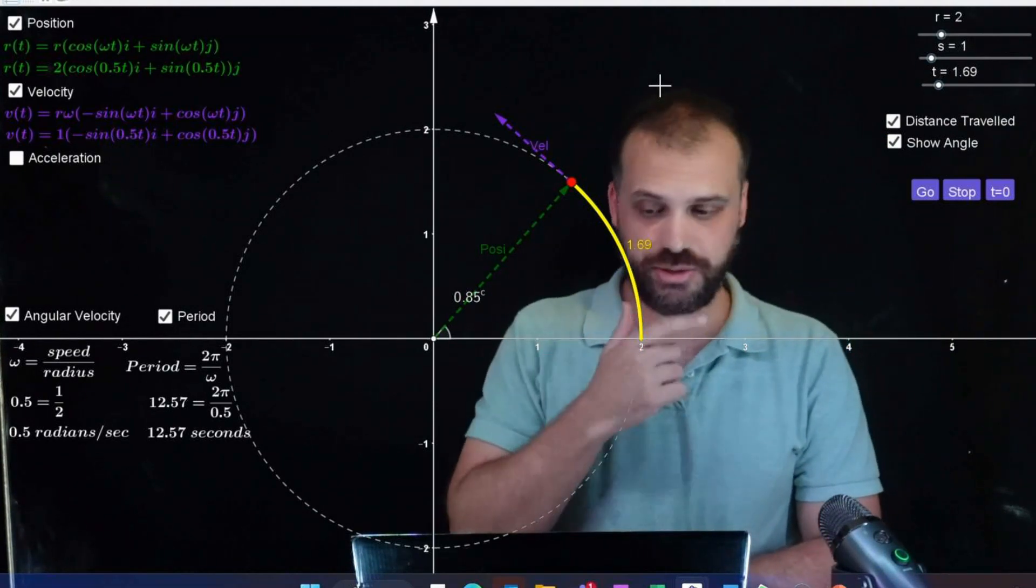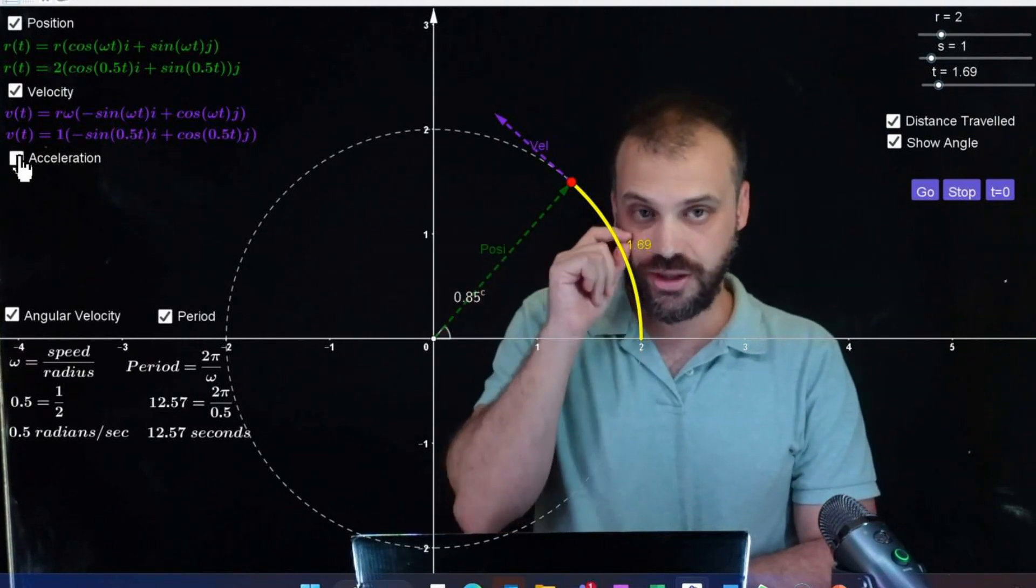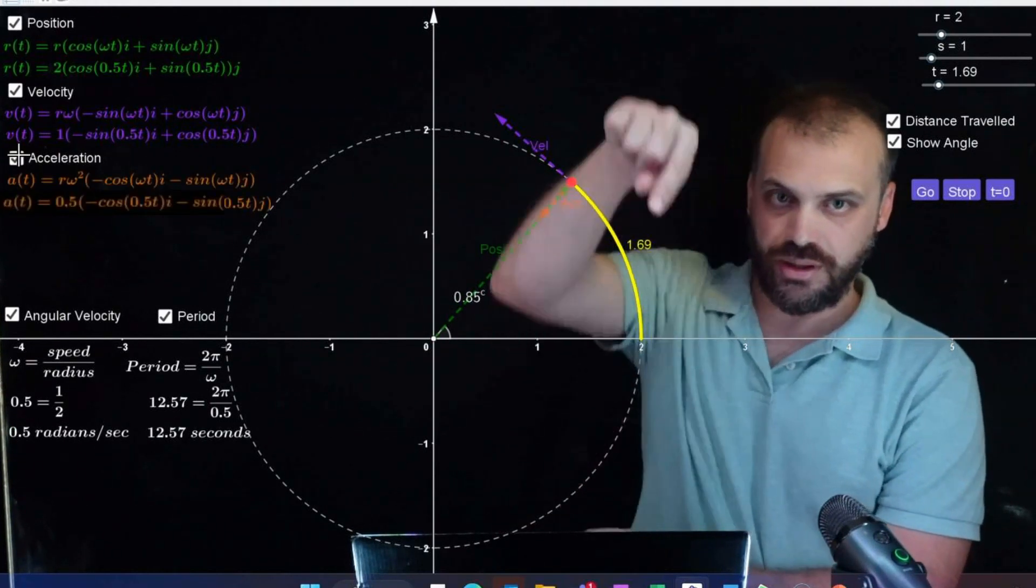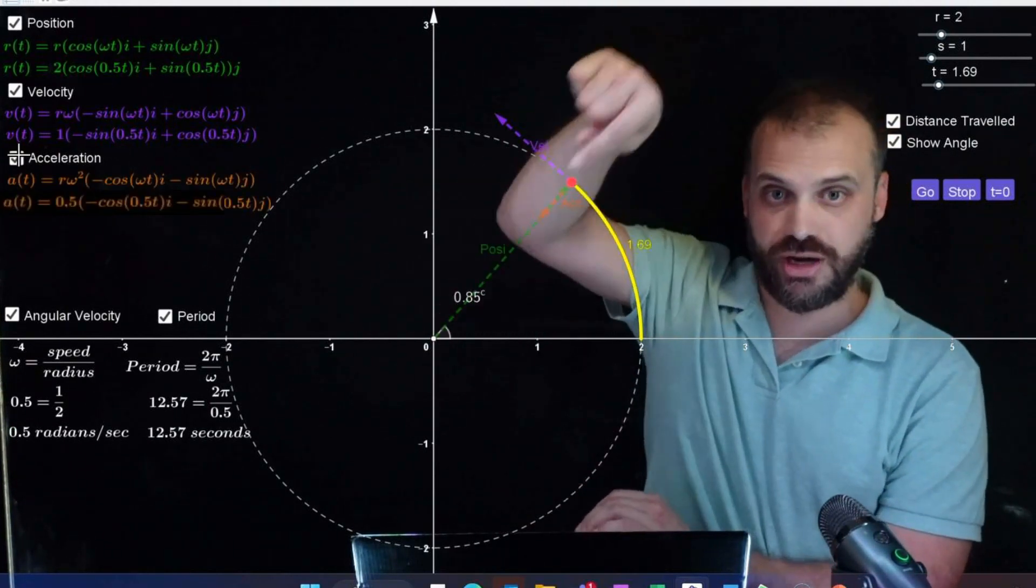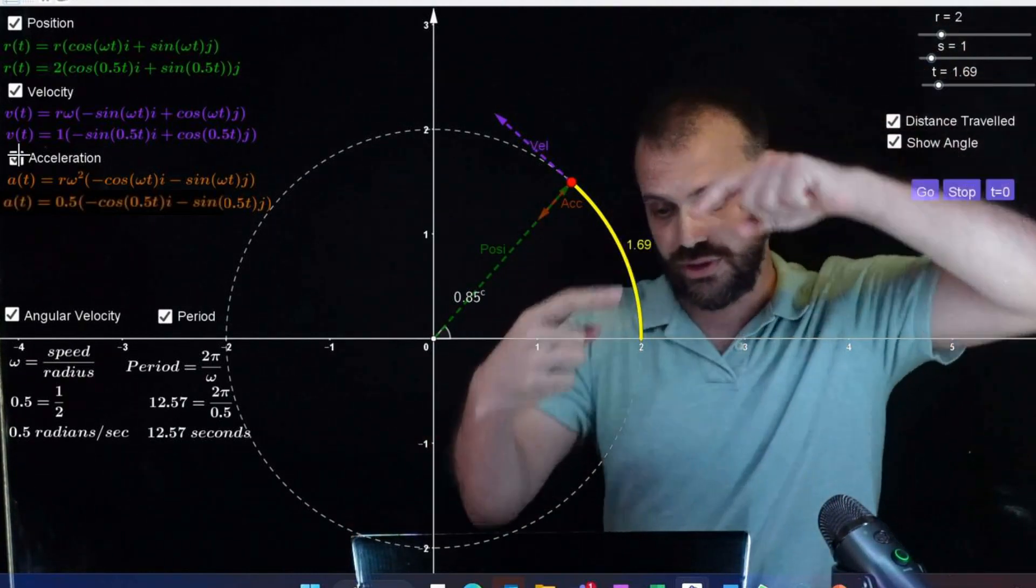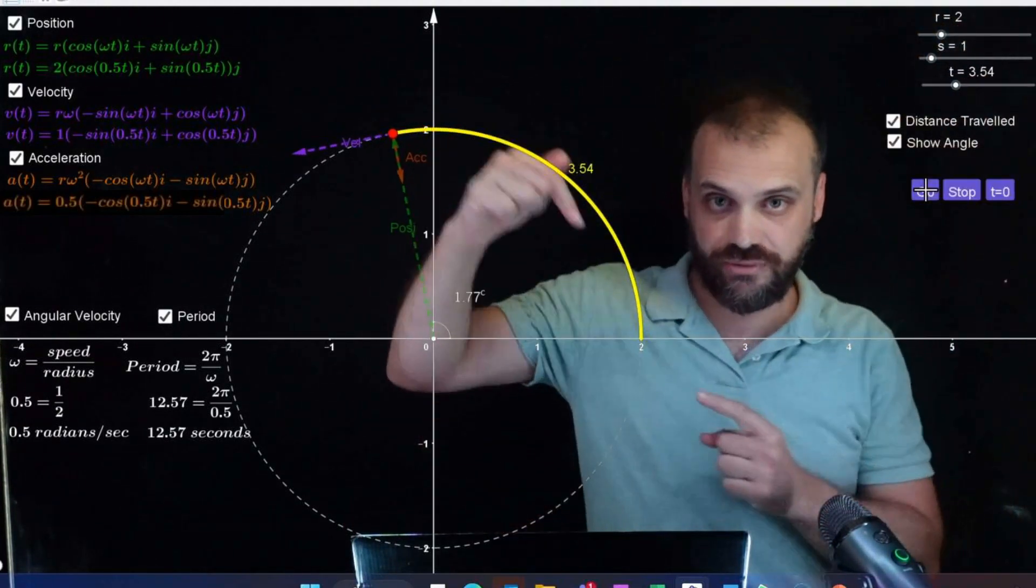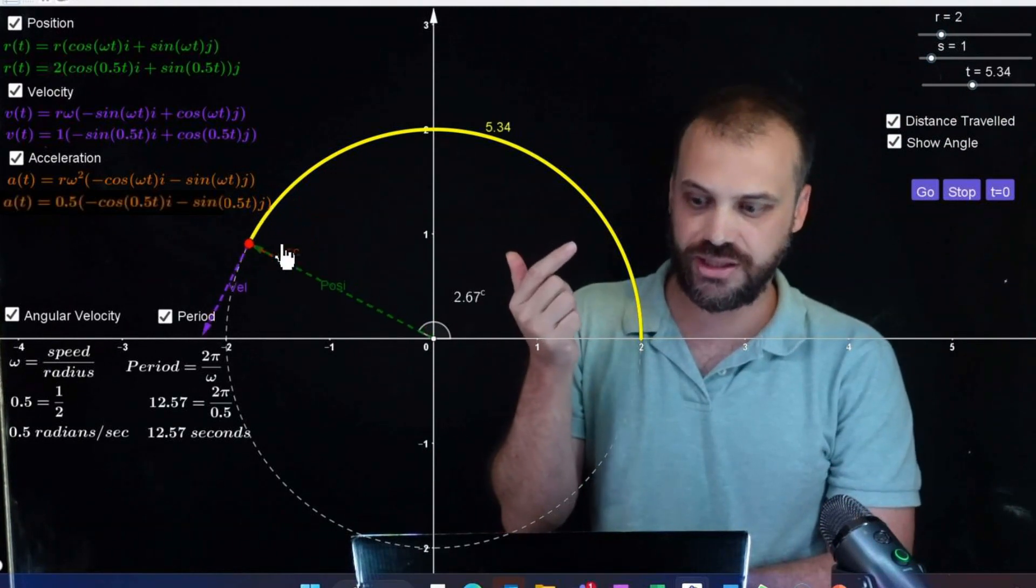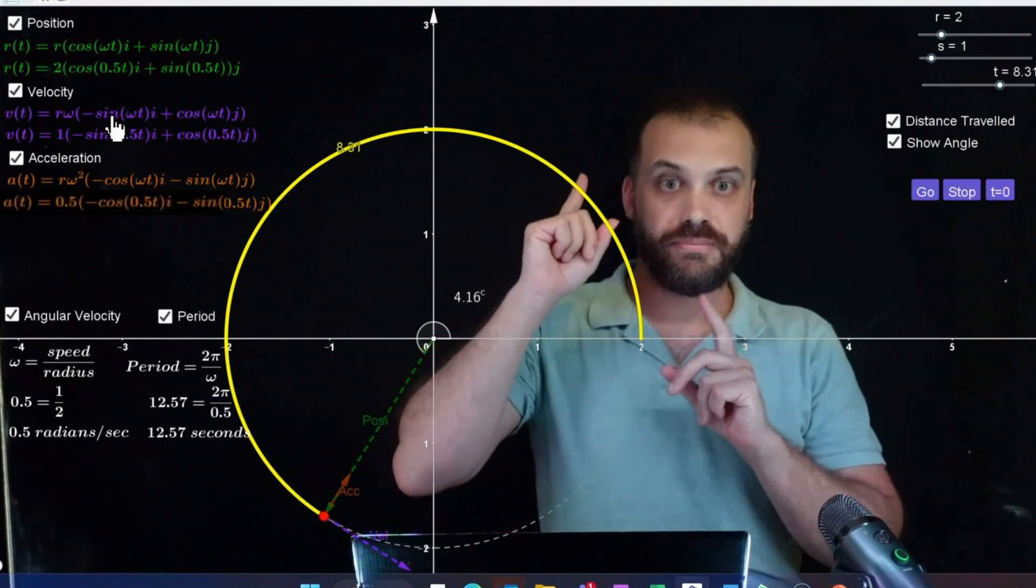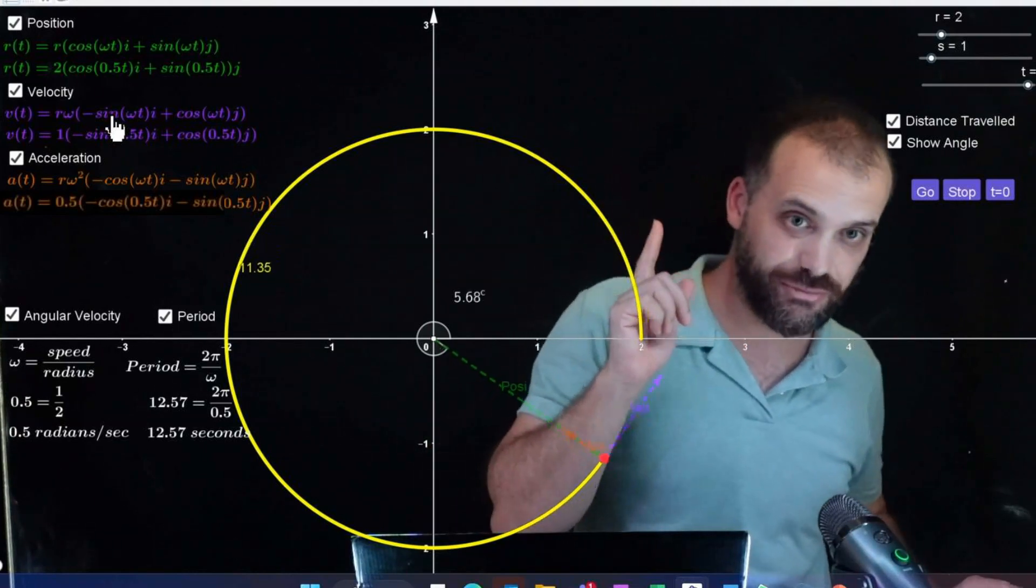And finally, and this may surprise you, if you derive the velocity and you get the acceleration vector, watch where the acceleration vector goes. It goes straight backwards towards that position vector. The position vector and the velocity vector, if we hit go on this, are always in different directions. And the acceleration vector is always at right angles to the velocity vector. So position vector at right angles to the velocity vector, velocity vector at right angles to the acceleration vector.